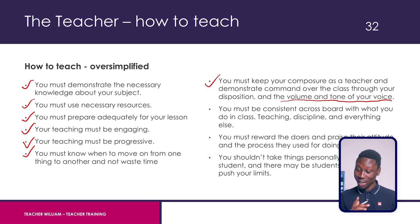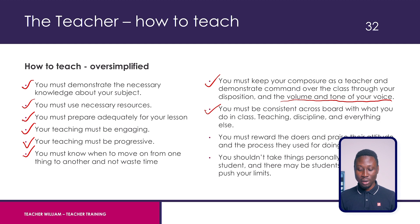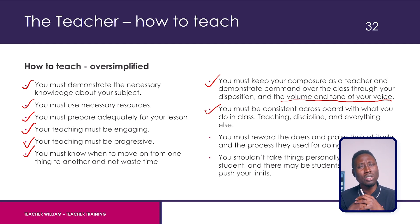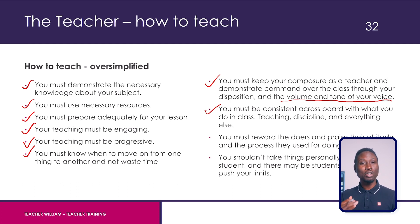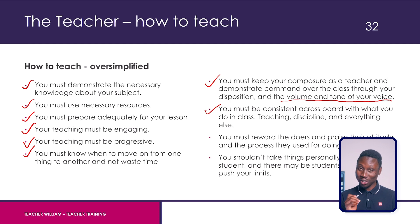But don't overdo it. Next, you must be consistent across the board with what you do in class — your teaching, your discipline, and everything else. It's not like today the teacher looks happy and wants to play, and the next day the teacher looks moody and sad. When you say something, it has to mean something. Say what you mean and mean what you say, else the students will take you for granted.